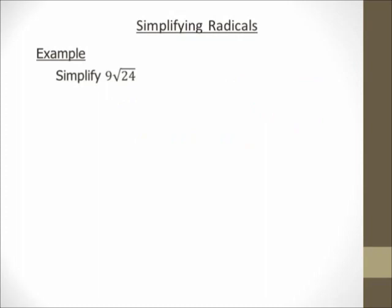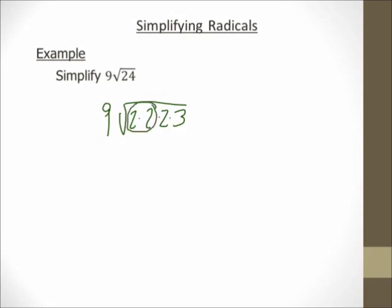Hi there, it's me, Mr. B. We're going to simplify 9√24. First step: start with what's inside the radical, the radicand — that's 24. So I'm going to break that down into its primes. 9 is the coefficient out front; 24 is 2 times 2 times 2 times 3. My index is a 2 since there's no number written at the corner of the radical. I'm going to circle pairs of numbers, and I see two 2's — that's it. So I bring one 2 out front and multiply it by the 9 already out front: 9 times 2 is 18. My leftovers stay inside: 2 times 3 is 6. My answer is 18√6.